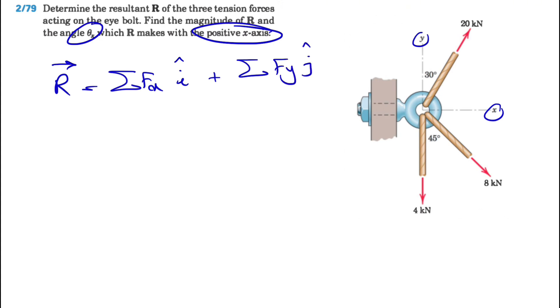That's going to give us the j component. At the end, if we want to find the magnitude, we can call this part Rx and sum of all forces in y direction Ry. So Rx squared plus Ry squared is going to give us the magnitude of R. Let's start with Rx, which is the sum of all forces in x direction.